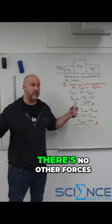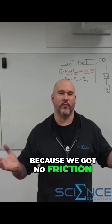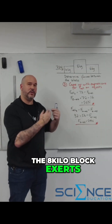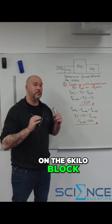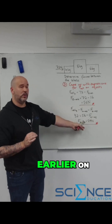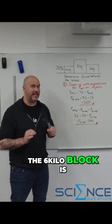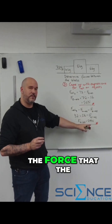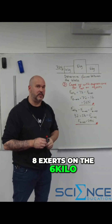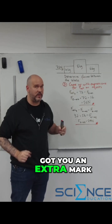When you look at the 6 kg block, there are no other forces acting on it — because we got no friction baby. So the force that the 8 kg block exerts on the 6 kg block must also be the net force. Earlier we figured out that the net force on the 6 kg block is 24 newtons, and that aligns with the force the 8 exerts on the 6. Easy peasy.